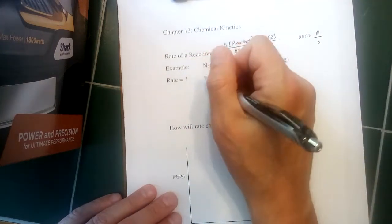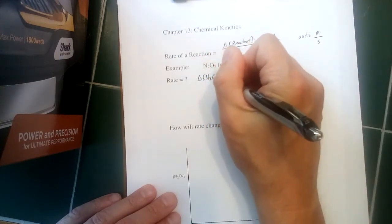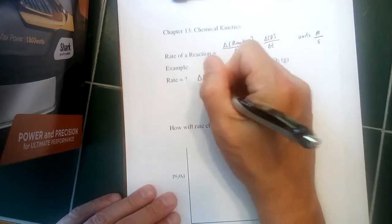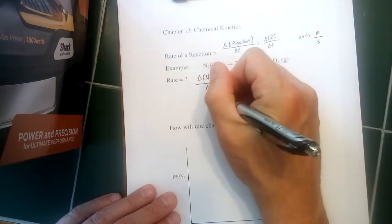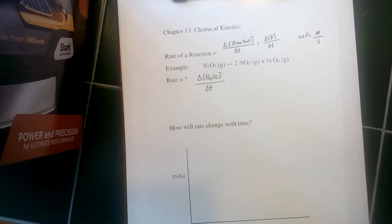So just starting with the reactant, this is fairly straightforward. The rate would be the concentration change for N2O5, that reactant, divided by the change in time. And that would give us a positive number, because as a reactant, you start with a high concentration, it gets lower. So you take the initial concentration, subtract the concentration at a certain time, and you get a positive number.